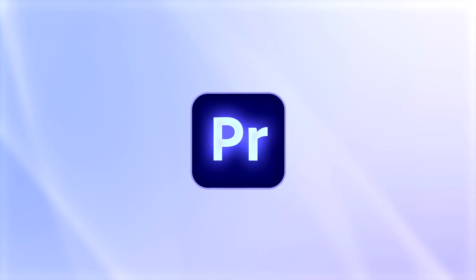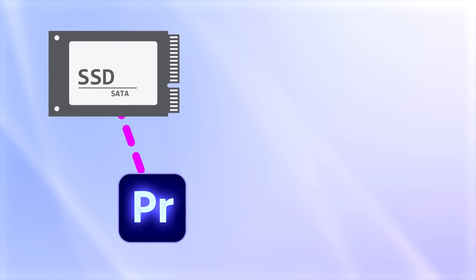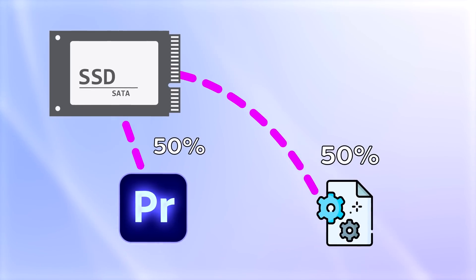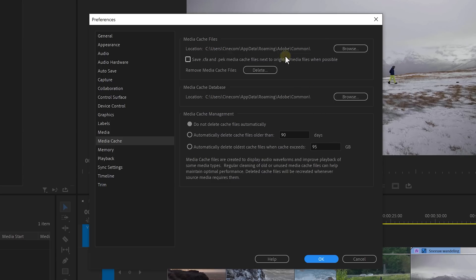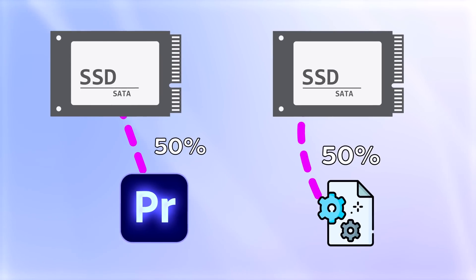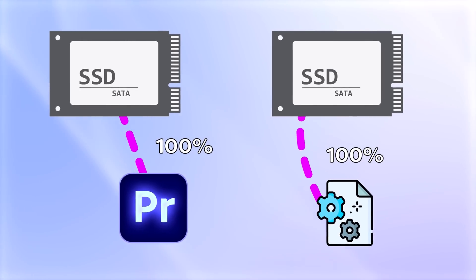There's an even better way to use cache files. When you're editing, Premiere is using your storage drive, and at the same time the drive is being used for caching. This means Premiere is slower when editing. But you can use another drive for caching — that way your main drive can be used 100% for editing.